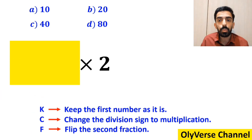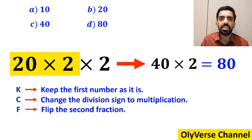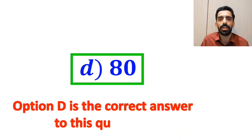So we remove the highlighted part and replace it with 20 times 2. And this expression simplifies to 40 times 2, which finally gives us the answer 80. Therefore, option D is the correct answer to this question.